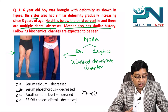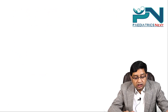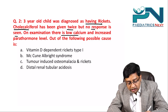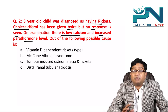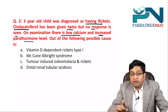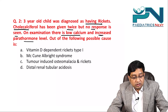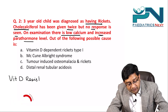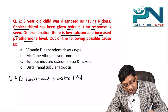Moving to the next question: a three-year-old child diagnosed with rickets was given cholecalciferol twice but with no response. On examination there is low calcium and increased PTH level. Since the child does not respond to cholecalciferol, this becomes a case of vitamin D resistant rickets — also called refractory rickets.